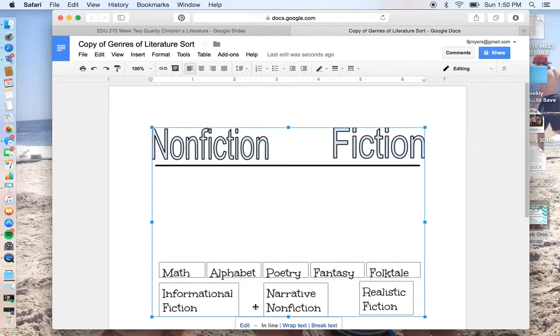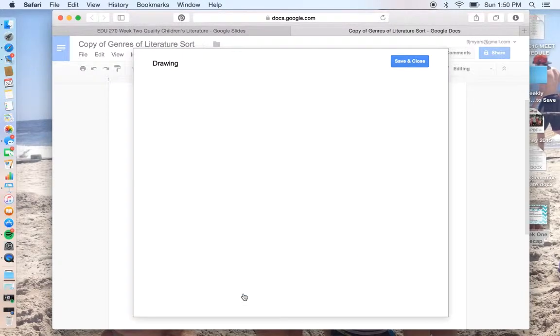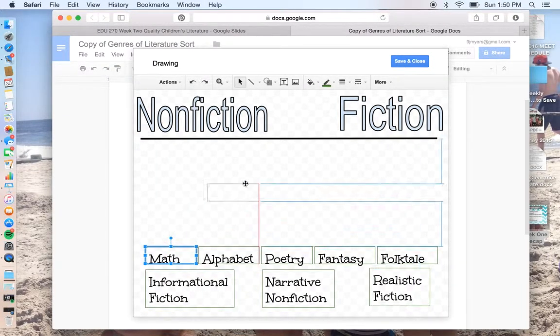Once we click down here in the drawing box you can see the word edit pops up. When you click edit it brings you a drawing area and now you can select the different areas and you can move them around.